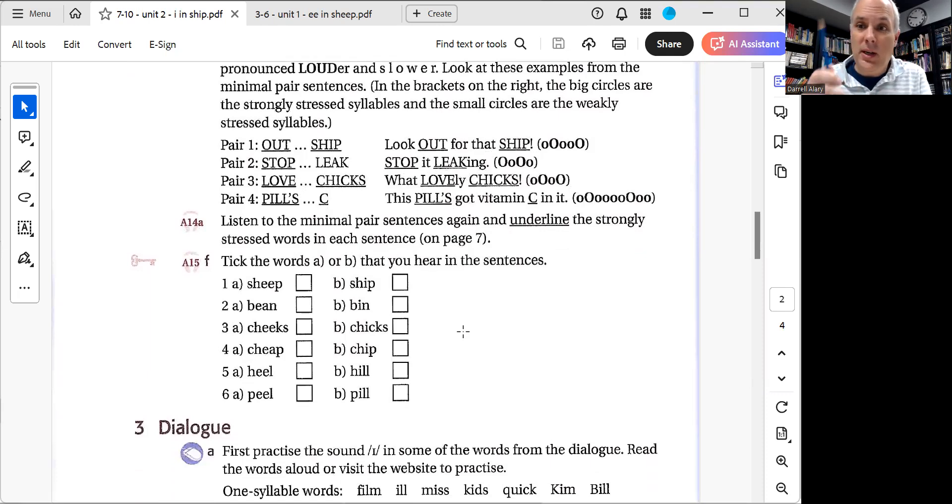Now, pencil time! I'm going to read six sentences, and the six sentences, they're going to have sheep or ship in them. Please tick the one when you hear. Now when I read these, I'm only going to read it once, so you really have to have your ears on. Do you hear this word or this word? A unit one word or a unit two word? Let's go. Ready? Here we go.